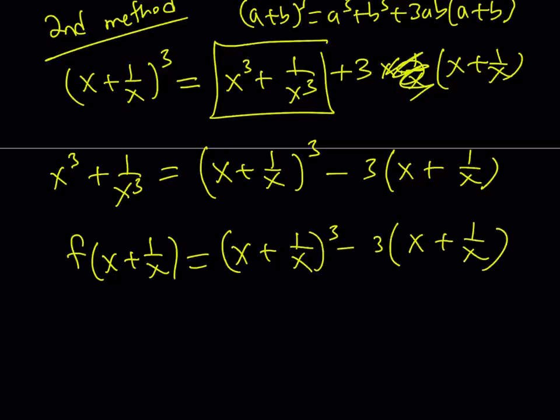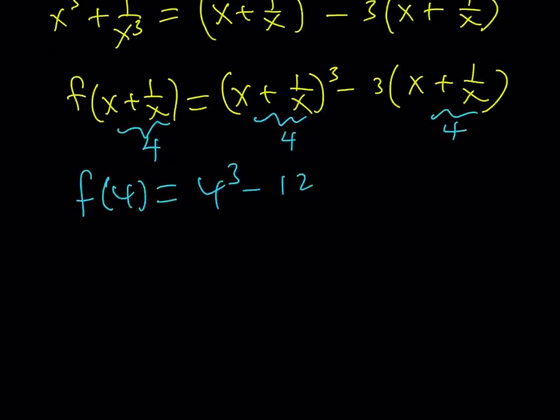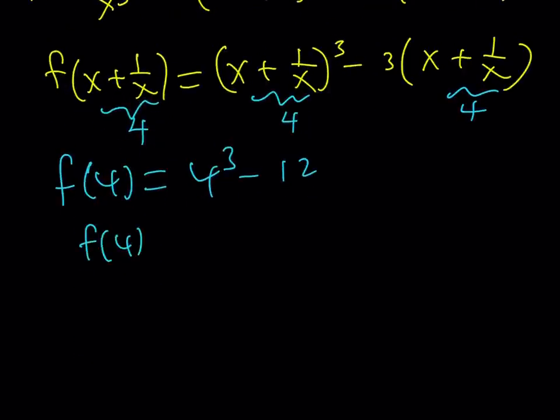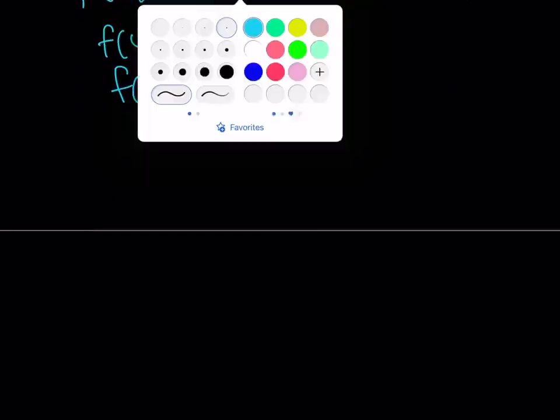And now I'm trying to evaluate f of 4, right? So I need to replace x plus 1 over x with 4. But I don't care what x is. I can basically replace it everywhere. And from here, f of 4 is going to be 4 cubed minus 3 times 4, which is 12. And 4 cubed is equal to 64. 64 minus 12, that is going to give me the same answer as before. And f of 4 is going to be 52.